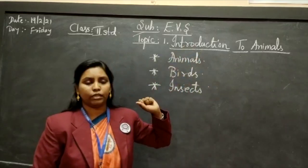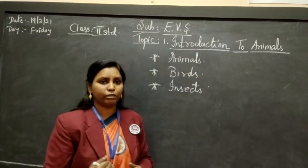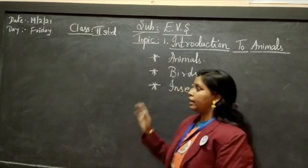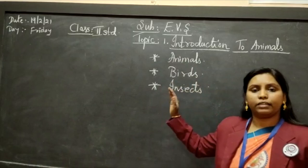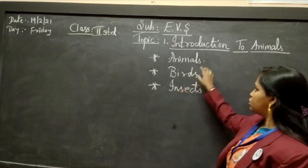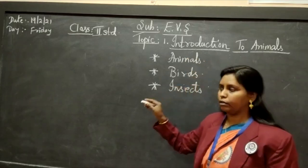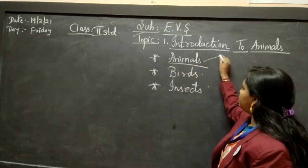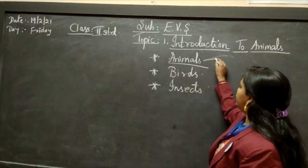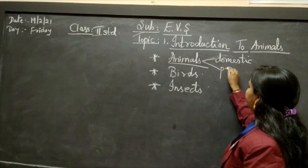So what do you mean by animals first? Animals are living beings, created like us — like human beings, created by God. They are a specific type of living beings. There are many types of animals, but as per your class, we will read about domestic animals and pet animals.